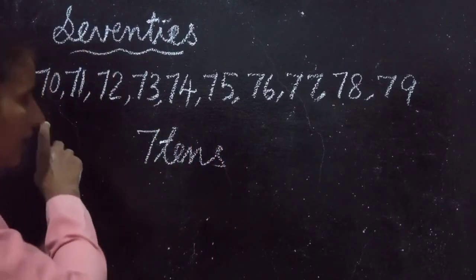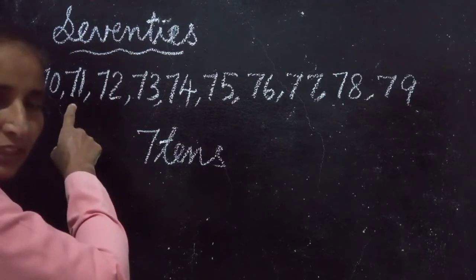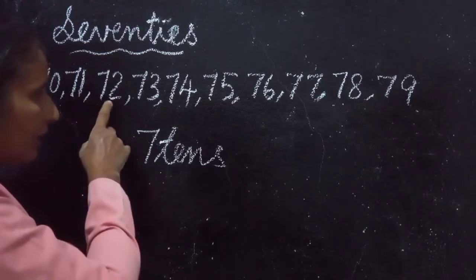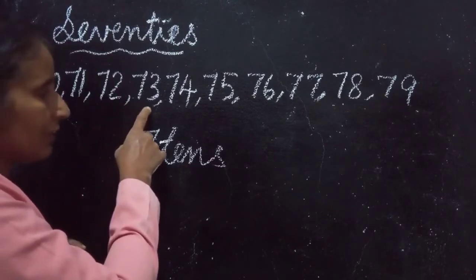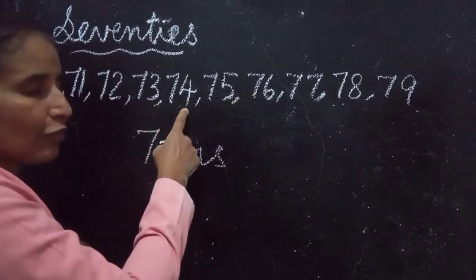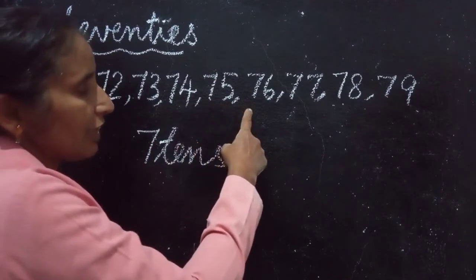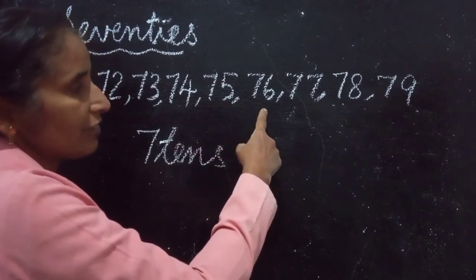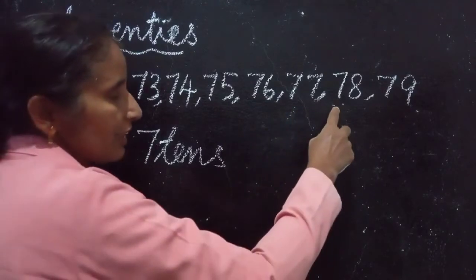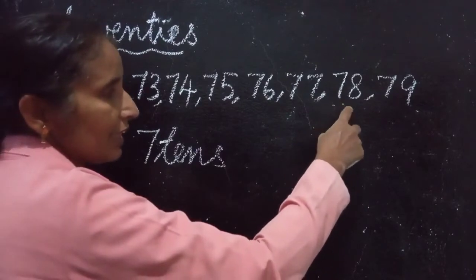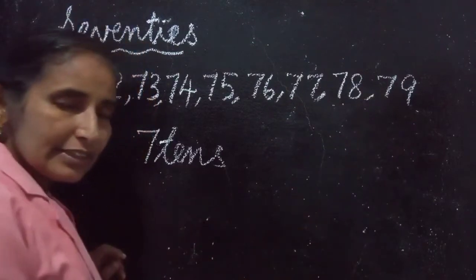Tens and ones in these numbers are 7 tens and 0 ones is 70. 7 tens and 1 ones is 71. 7 tens and 2 ones are 72. 7 tens and 3 ones are 73. 7 tens and 4 ones are 74. 7 tens and 5 ones are 75. 7 tens and 6 ones are 76. 7 tens and 7 ones are 77. 7 tens and 8 ones are 78.